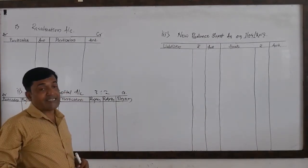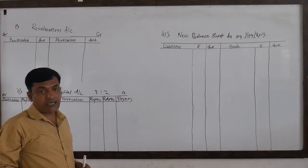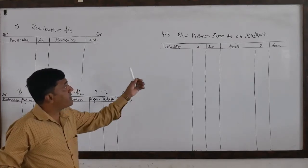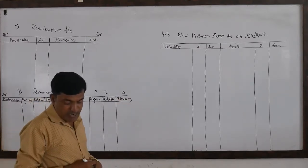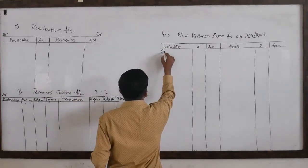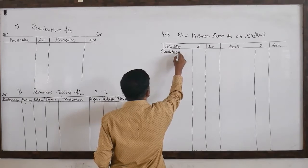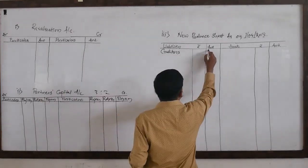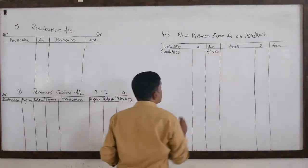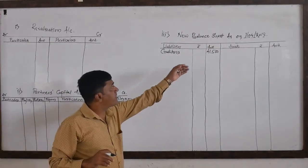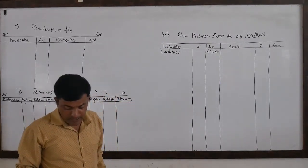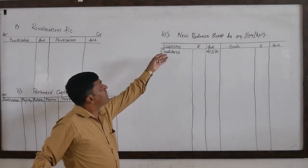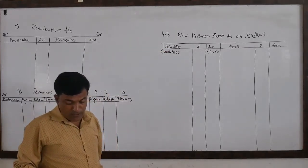Look at the liability side of the old balance sheet — that is creditors. There is no adjustment for creditors, so I am going to write it directly on the liability side of the new balance sheet. Creditors: 41,500. Since there is no adjustment, I have written it on the outer column. This is an outside liability, that's why I've written it on the liability side of the new balance sheet.